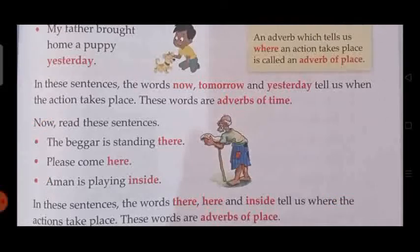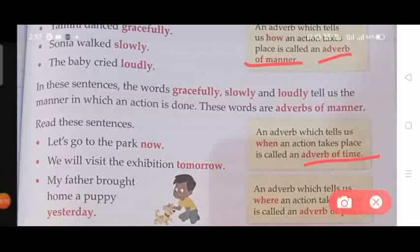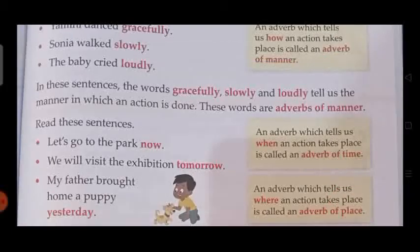There are three types of adverbs: adverb of manner, adverb of time, and adverb of place. An adverb of manner explains how an action is carried out. Very often, adverbs of manner are adjectives with '-ly' added to the end, but some adverbs of manner have the same spelling as the adjective form. Examples include: slowly, rapidly, clumsily, badly, diligently, sweetly, warmly, and sadly.